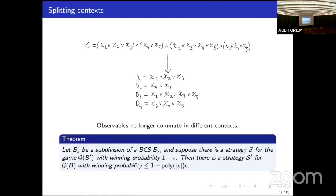The harder of the two types of transformations is a context splitting or a subdivision. It's taking a large constraint here and splitting it into multiple smaller constraints in the target BCS. What makes the analysis hard is that the observables no longer need to commute when they appear in different contexts. In the original constraint, a player might be asked for their assignment to the whole constraint at the same time. When they measure their variable, their observable for their variable X1 and their observable for their variable X5, these two observables have to commute. But now that they're in different constraints in the target BCS, the observable here for X1 in D1 and X5 in D3 no longer need to commute. This is a hurdle that we had to overcome, but we show that we can do this with only polynomial drop-off in the length of the input string.